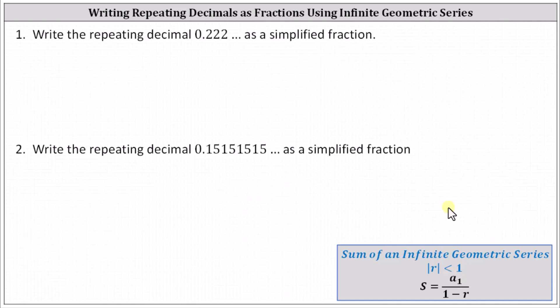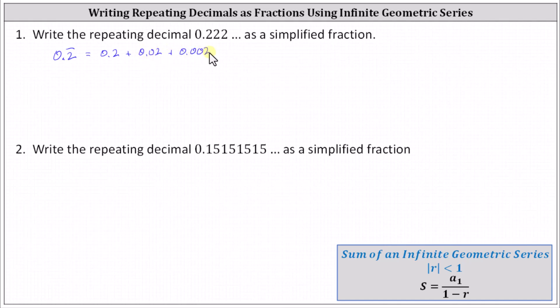For number one, we have the repeating decimal zero point two, two, two, and so on, which we can also write as zero point two with a bar over the two, which is equal to zero point two plus zero point zero two plus zero point zero zero two, and so on.